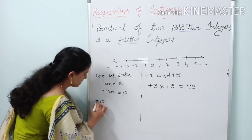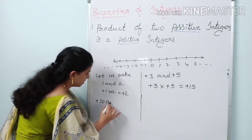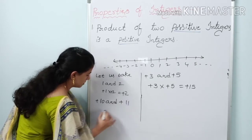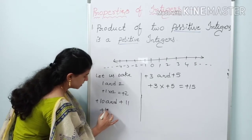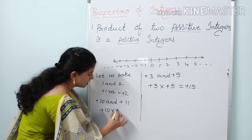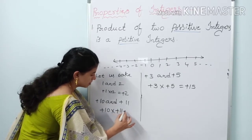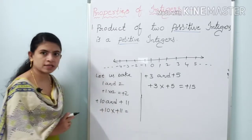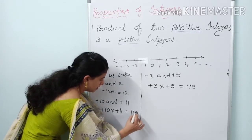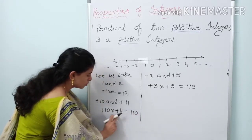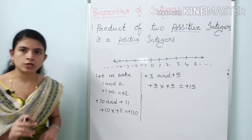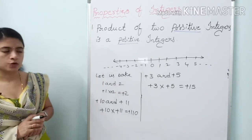Next example: plus 10 and plus 11. Applying multiplication: plus 10 into plus 11 equals 110. Plus into plus gives plus. So the product of two positive integers is positive.